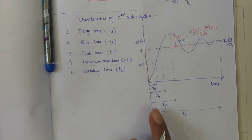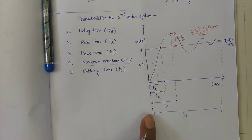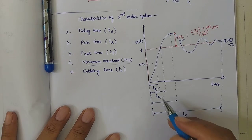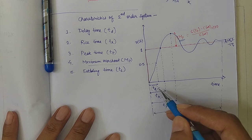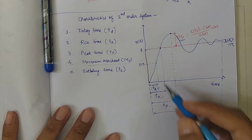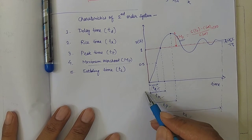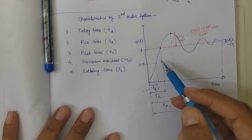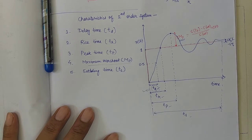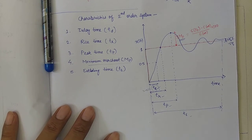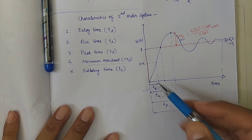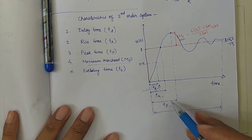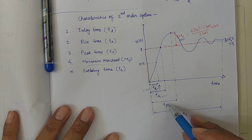These time measures are important to characterize the system. For example, a higher delay time means the system is sluggish and not responding as per the input. Similarly, all these parameters collectively describe system behavior.